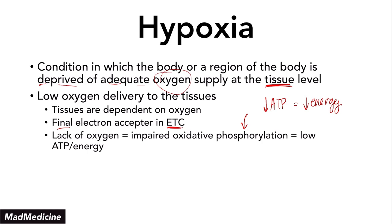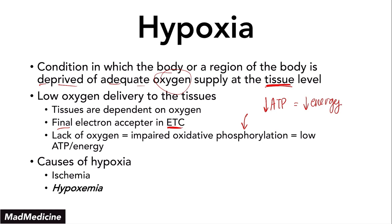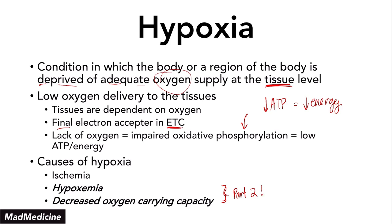The causes of hypoxia can be categorized into three main categories: ischemia, hypoxemia — and it's very important you understand that hypoxemia and hypoxia are different — and decreased oxygen carrying capacity. Hypoxemia and decreased oxygen carrying capacity will be discussed in part two of this lecture series. Right now we're going to focus on ischemia.